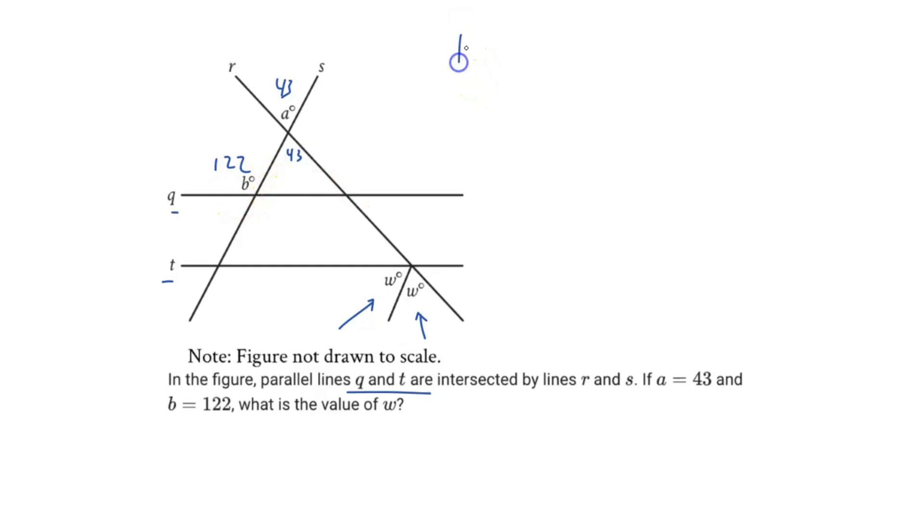And then I see supplementary angles. Whenever you have an angle on a straight line, that's going to be equivalent to 180 degrees. So 180 minus 122, we can find the angle that is opposite of b. 180 minus 122 gives us a value of 58 degrees.